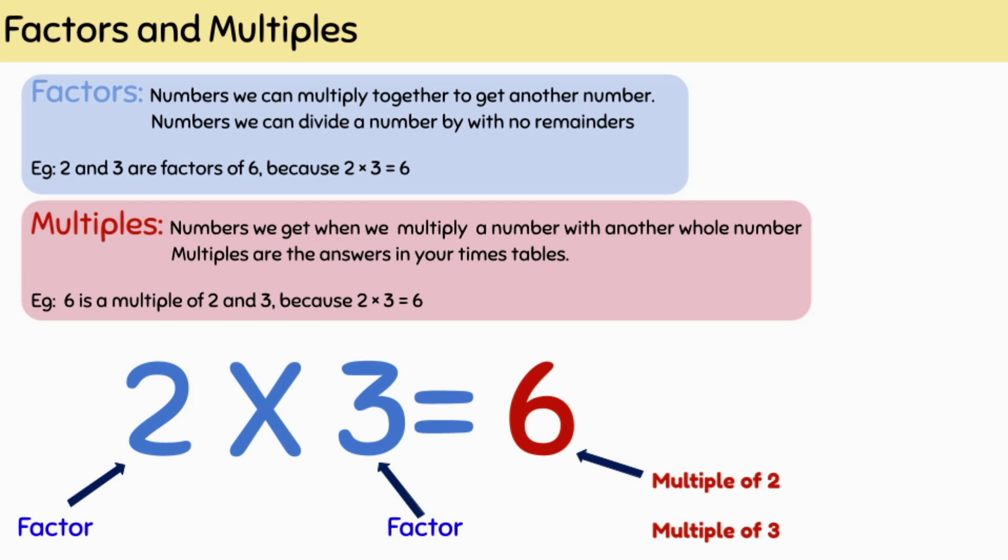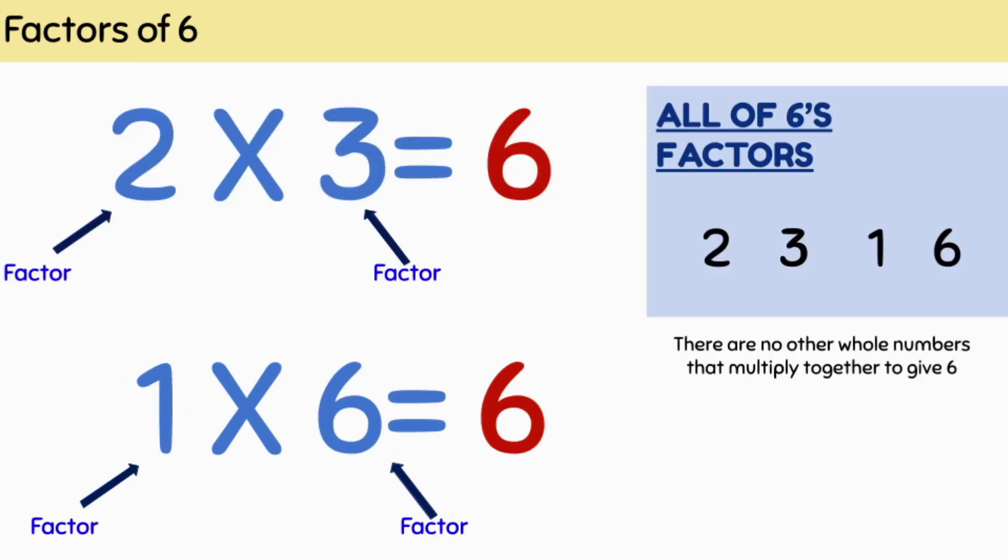There are two ways we can work out the factors of a number, either by multiplying or dividing. For example, two and three multiply together to give us six. We would describe two and three as factors of six. We can also say that six is a multiple of two and three.